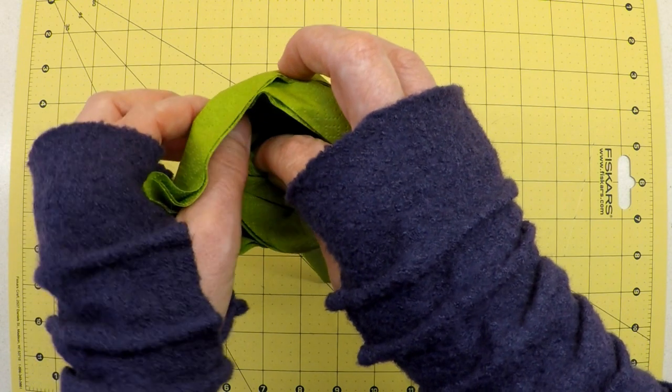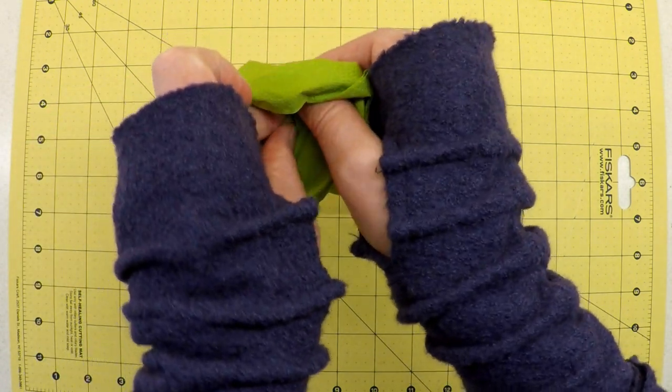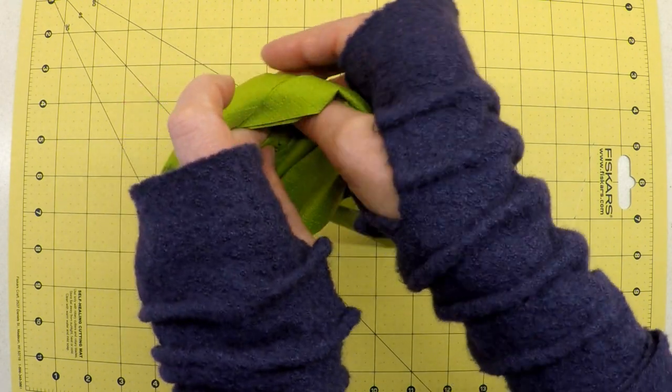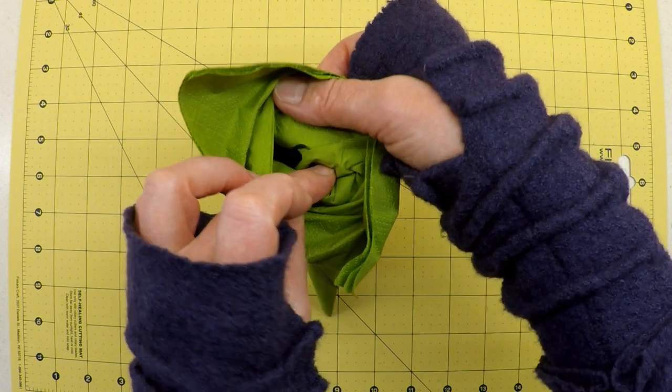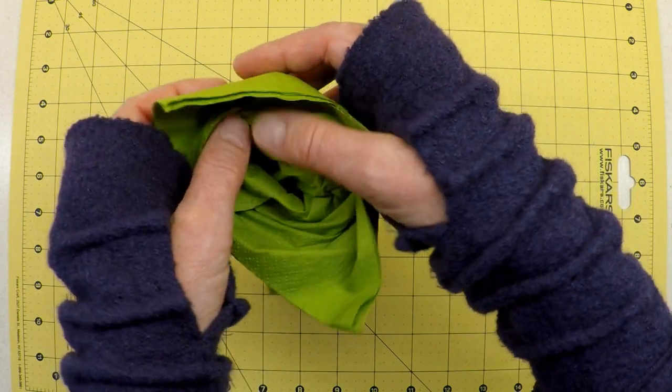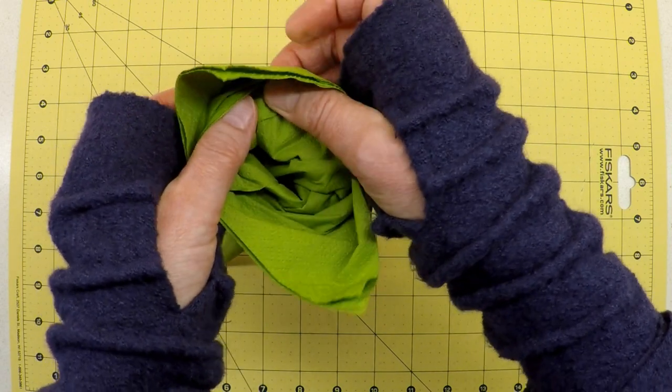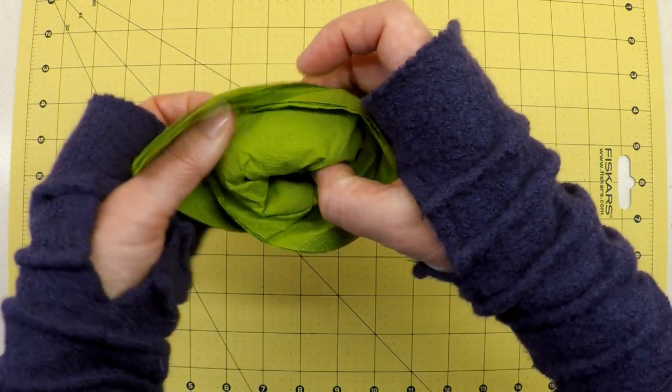It is fiddly with paper because unlike fabric, there's no real bias to paper and it doesn't want to give. You're just going to have to be very careful. It's like turning a sock inside out but extremely gently. It may take me a little bit because I don't want to tear the paper.